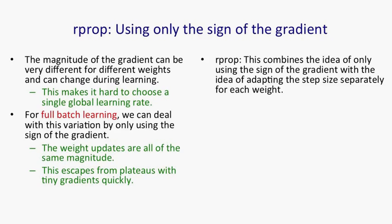RProp combines the idea of just using the sign of the gradient with the idea of making the step size depend on which weight it is. So to decide how much to change a weight, you don't look at the magnitude of the gradient — you just look at the sign of the gradient — but you do look at the step size that you've decided on for that weight. That step size adapts over time, again without looking at the magnitude of the gradient.